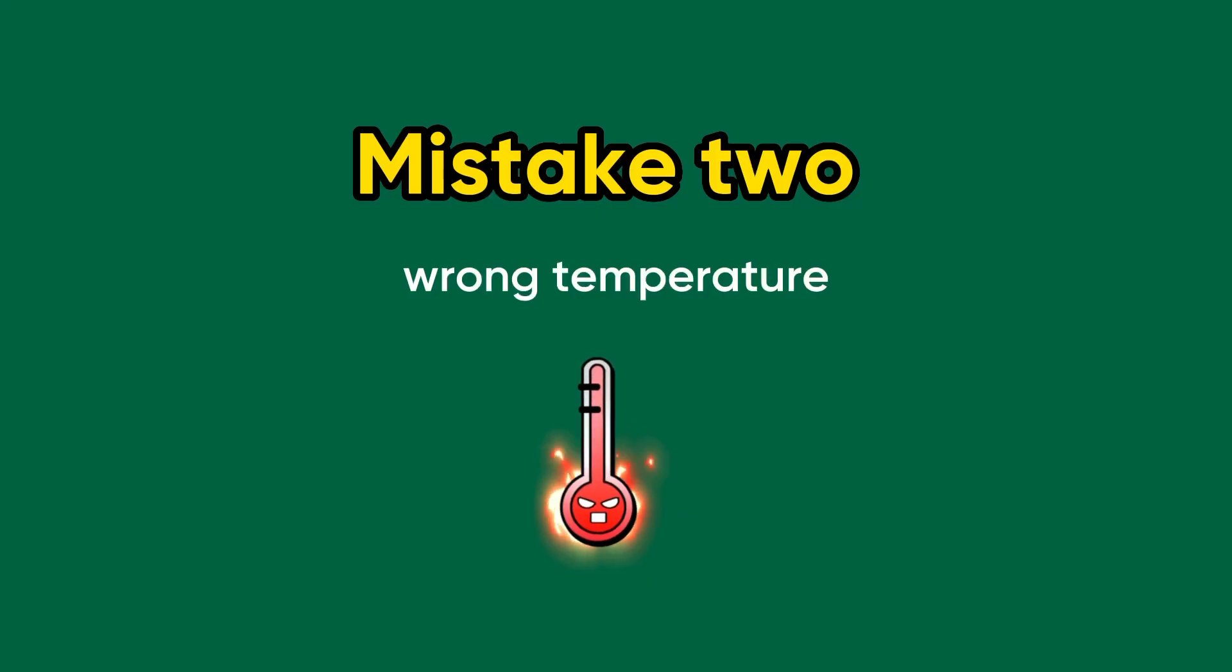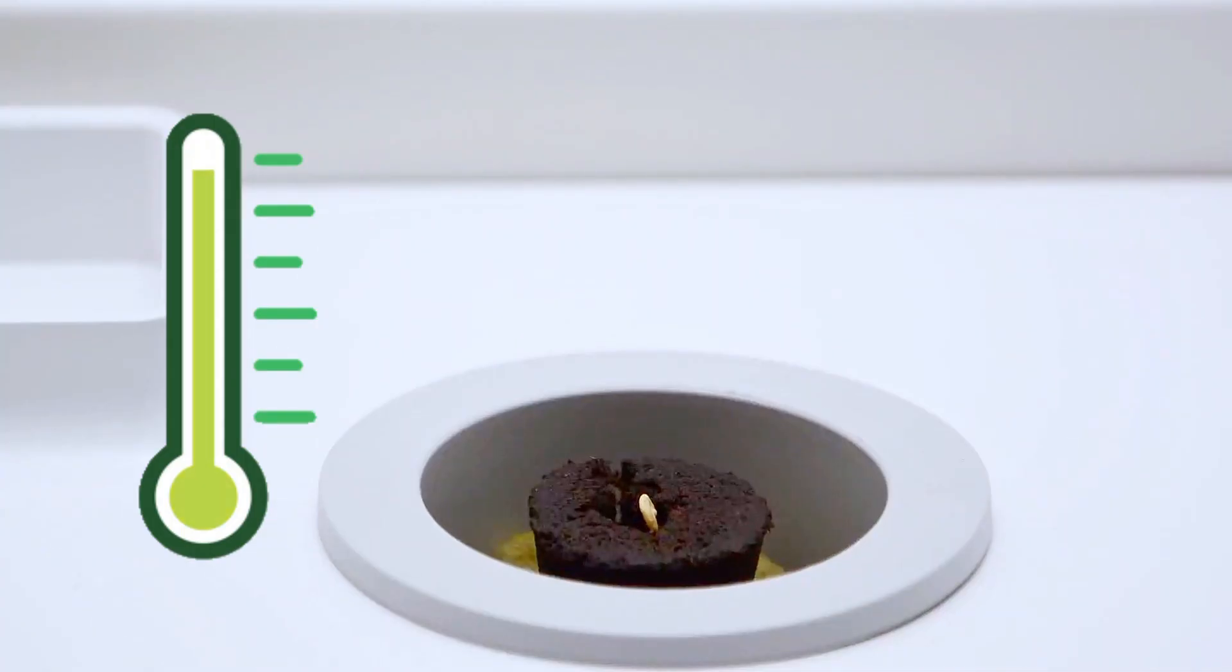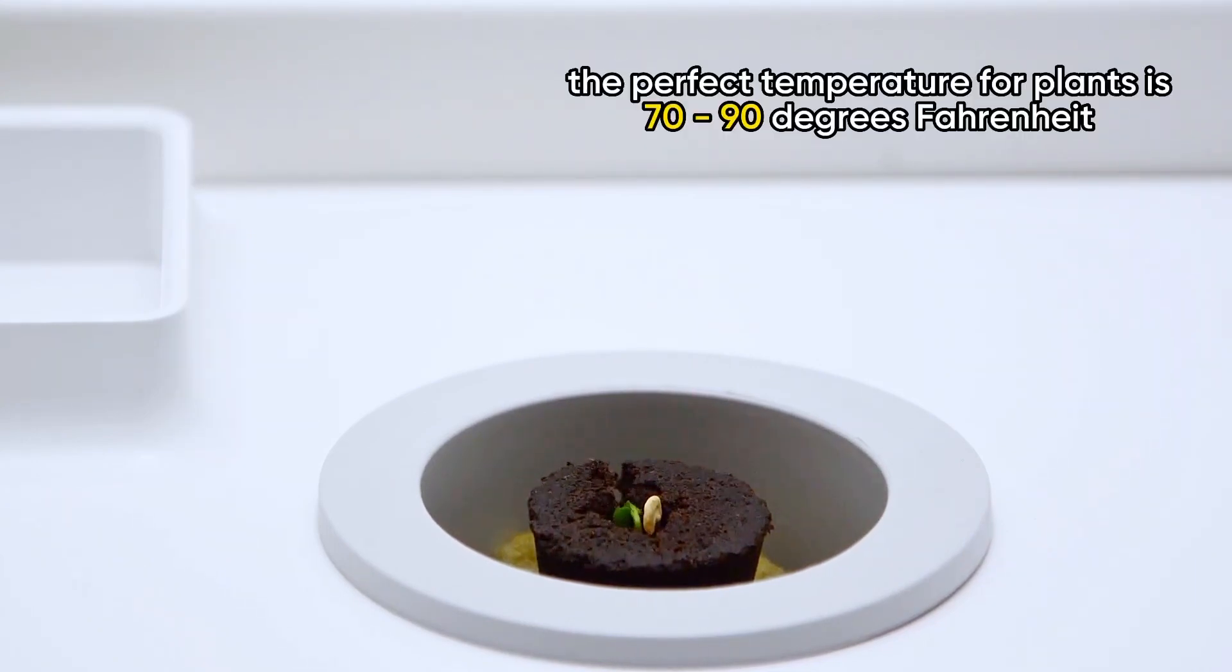Number 2. Wrong Temperature. Think of seeds like Goldilocks and the Three Bears. The temperature needs to be just right. If it's too hot or too cold, they won't germinate. The ideal temperature for a seed to germinate is between 70 and 90 degrees Fahrenheit.